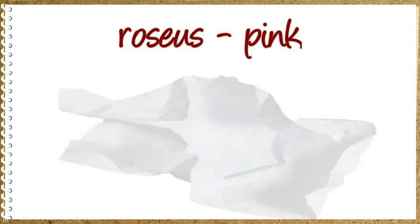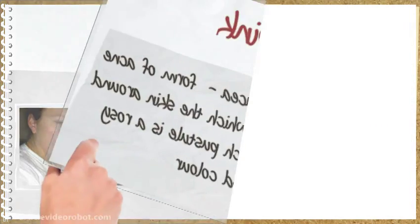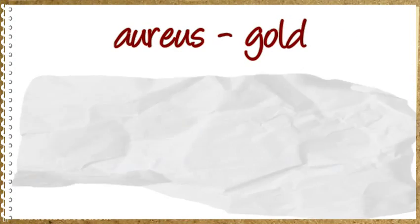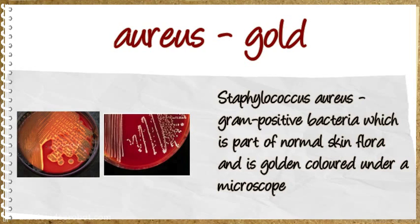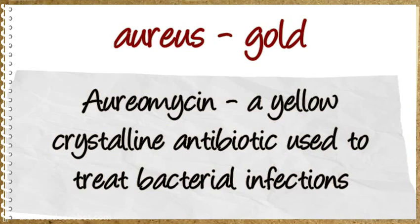Rosseous means pink. Rosacea: form of acne in which the skin around each pustule is a rosy red color. Aureus means gold. Staphylococcus aureus: gram-positive bacteria which is part of normal skin flora and is golden colored under a microscope.